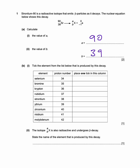So take the element from the list below that is produced by this decay. So we're looking for proton number of 35. And it's yttrium, which I can never pronounce properly. So please correct me in the comments. I probably made a mistake there. Anyway, most importantly, I got the answer right. So 39.